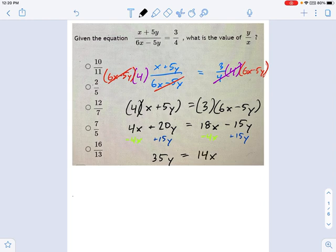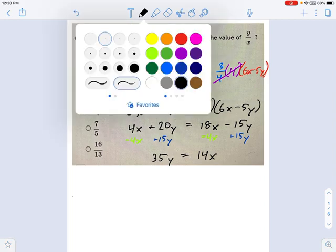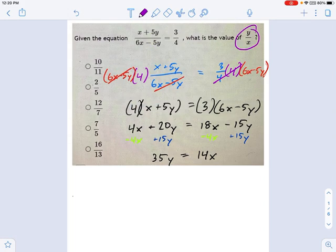35y equals 14x. All right, here's what it is. Now, keep an eye on what you want. You want y divided by x. So to get that, I'm going to divide each side by x. And now let's rewrite it again. This is 35 times (y/x) equals 14.